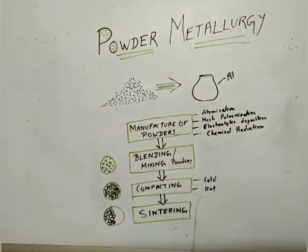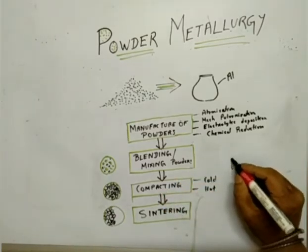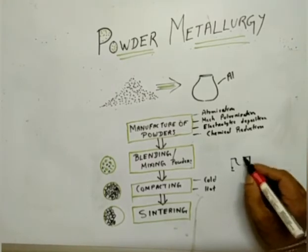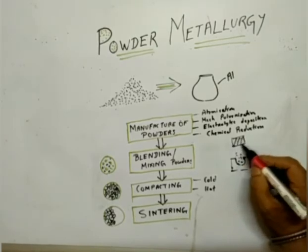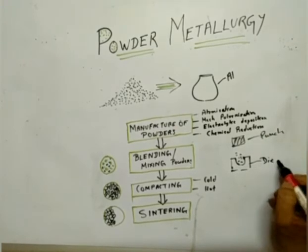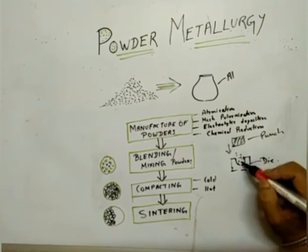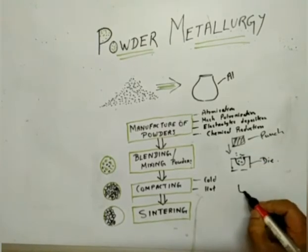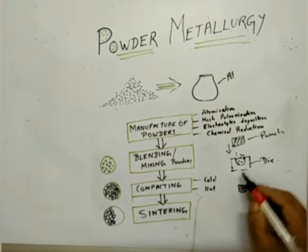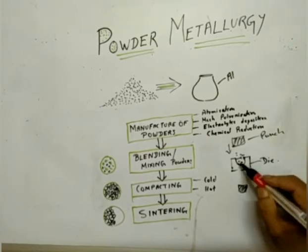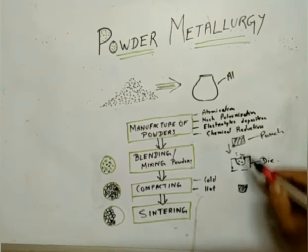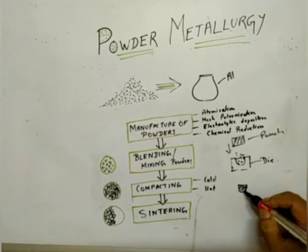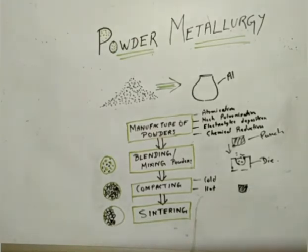After mixing, we go for compacting. Compacting uses a die and a punch — we pour our metallic powders into the die cavity, and with the help of a punch, the punch continuously impacts the powders. After some time, all these metal powders take the shape of the die cavity, giving us a near-net object of the desired shape. Compacting can be done in a cold state or hot state, similar to cold working or hot working.